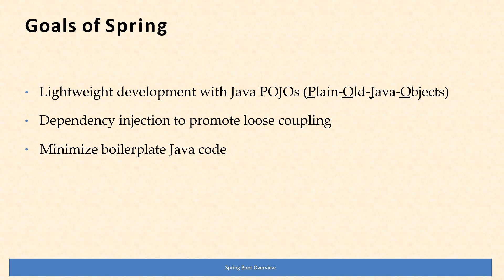Spring comes up with a principle called dependency injection, which is part of inversion of control. Through dependency injection, we can achieve loose coupling — no interdependencies. As developers, we are not going to create objects manually; we just inject them. The framework injects them for us — we just need to specify using certain annotations. The framework makes these dependencies ready and we use the @Autowired annotation, so the object is automatically wired and available to our program. Dependency injection is one of the major principles the Spring framework works on.